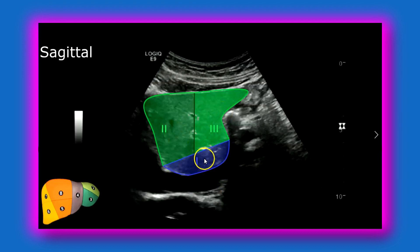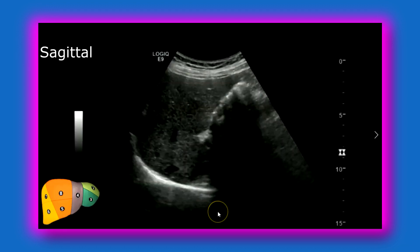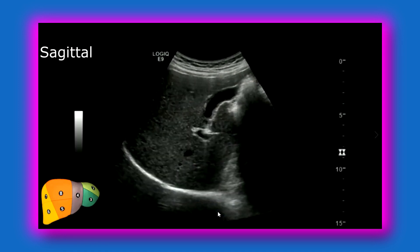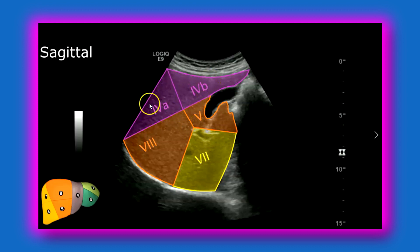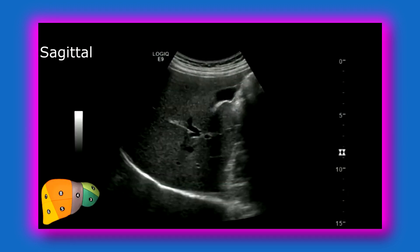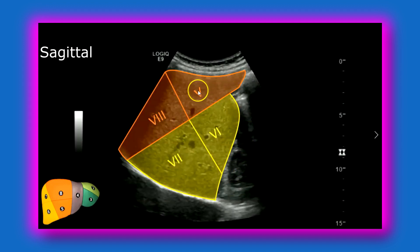Segment 1 is the caudate lobe. Moving to segment 4 — you have a little bit of gallbladder right there, and here's your portal vein plane: segment 4B, 4A, 5, 8, and 7. Moving further laterally, you're starting to get a little bit of kidney, so segments 5, 8, 6, and 7.